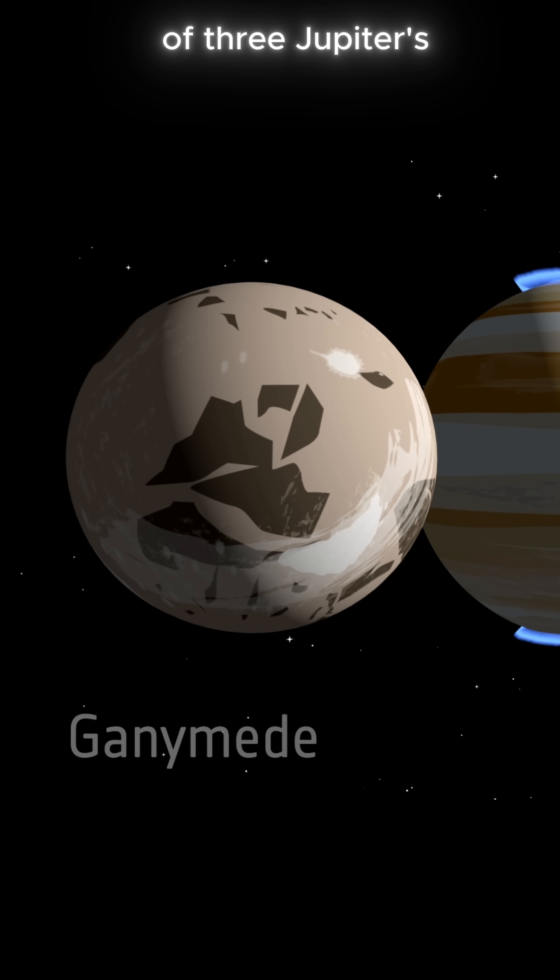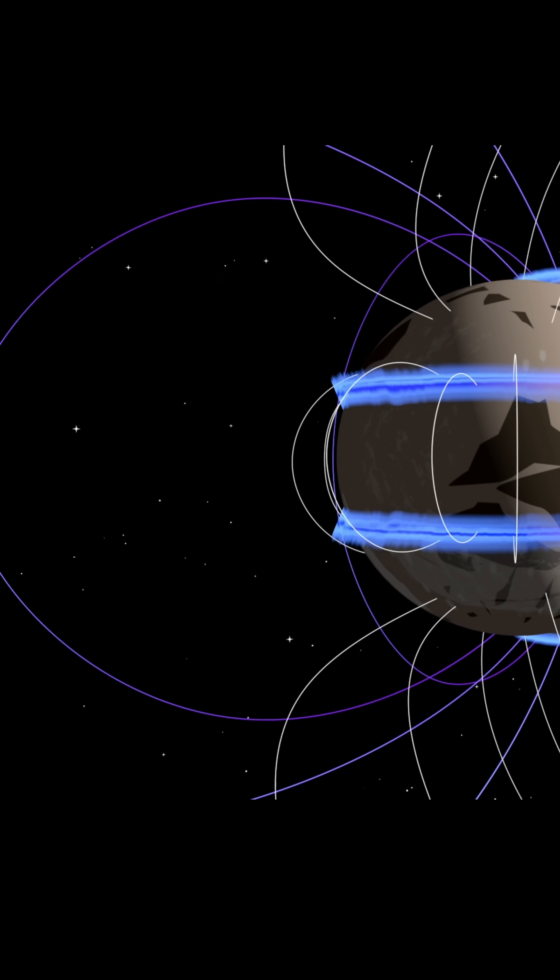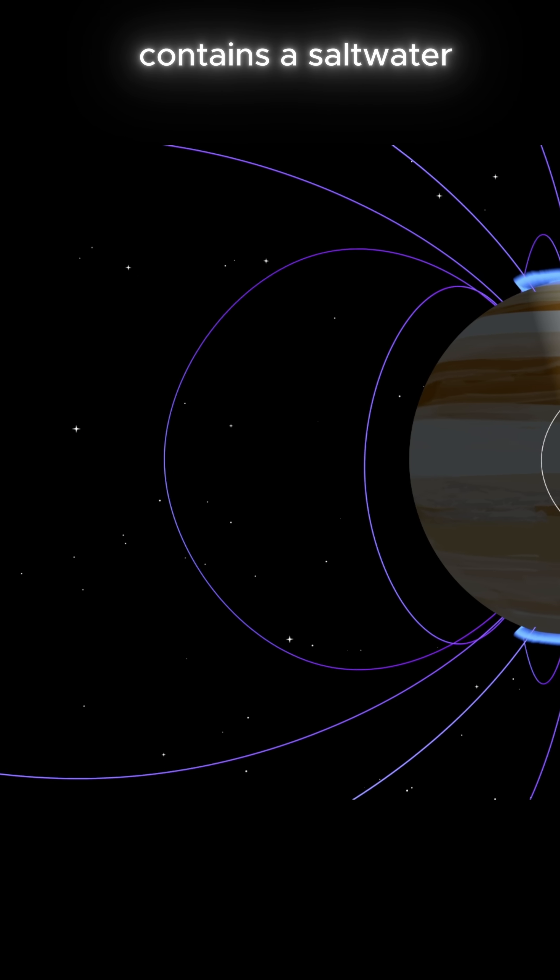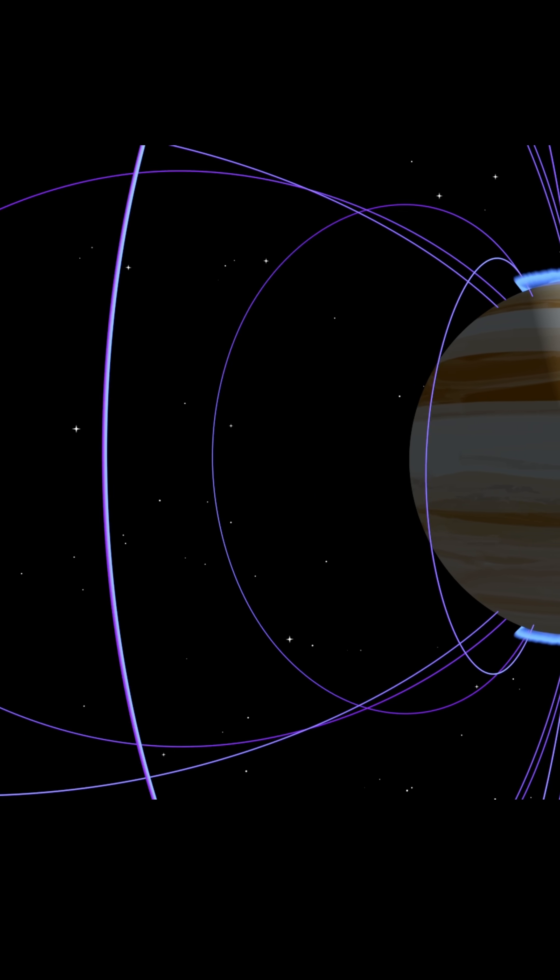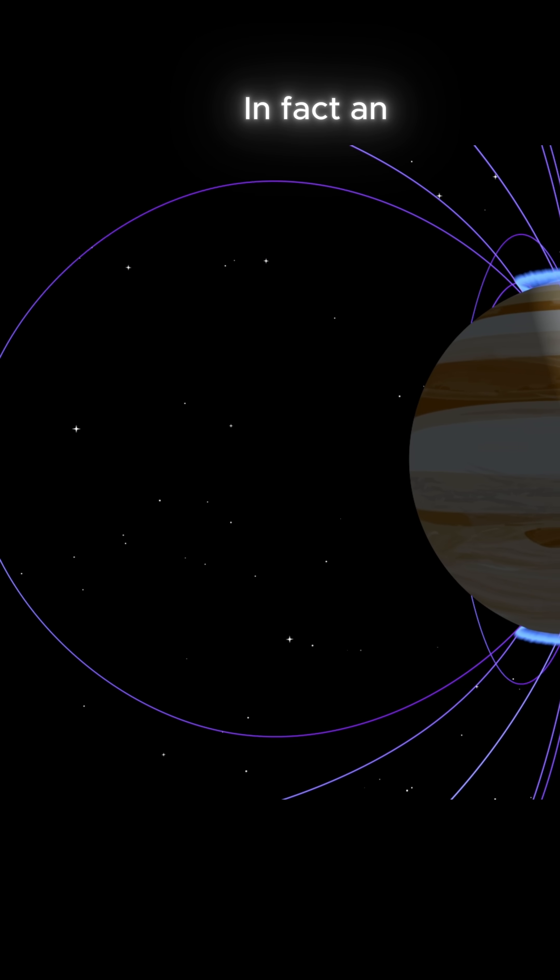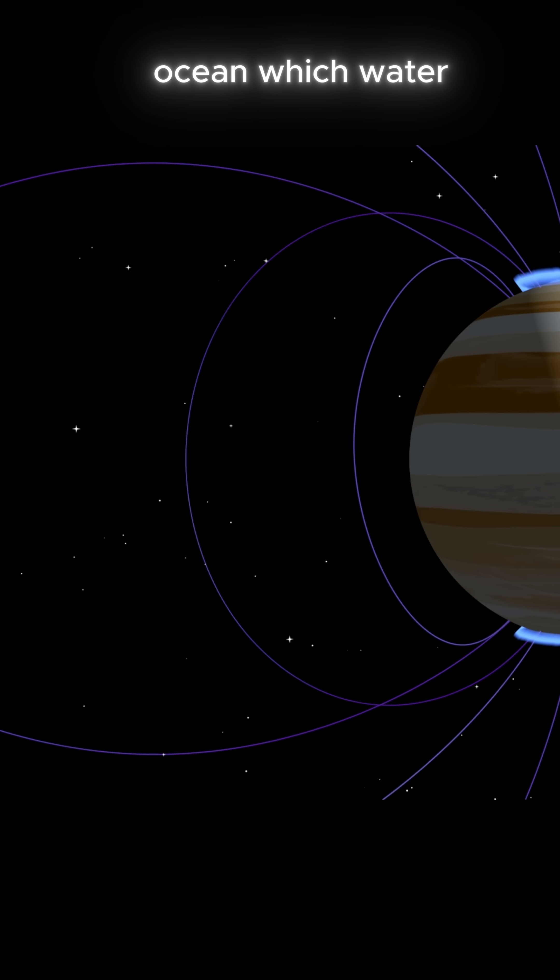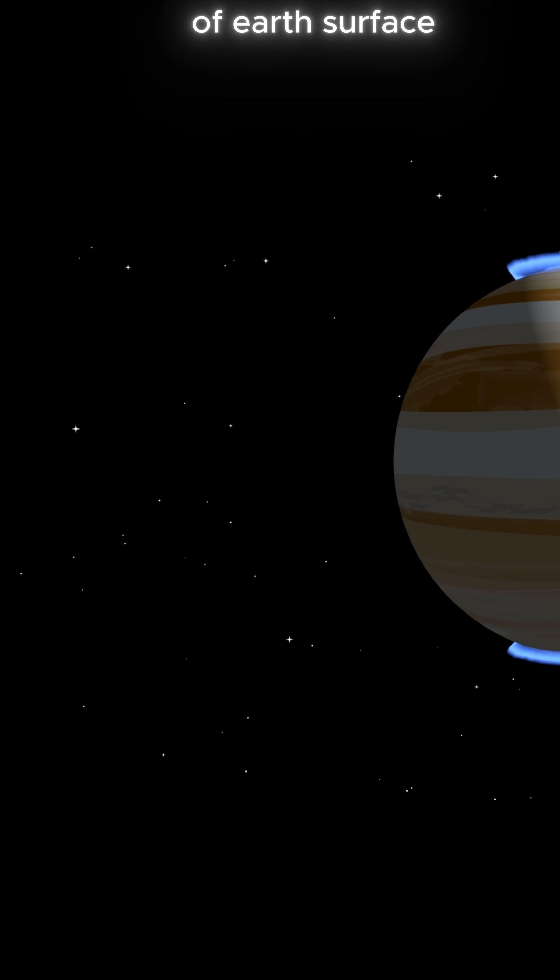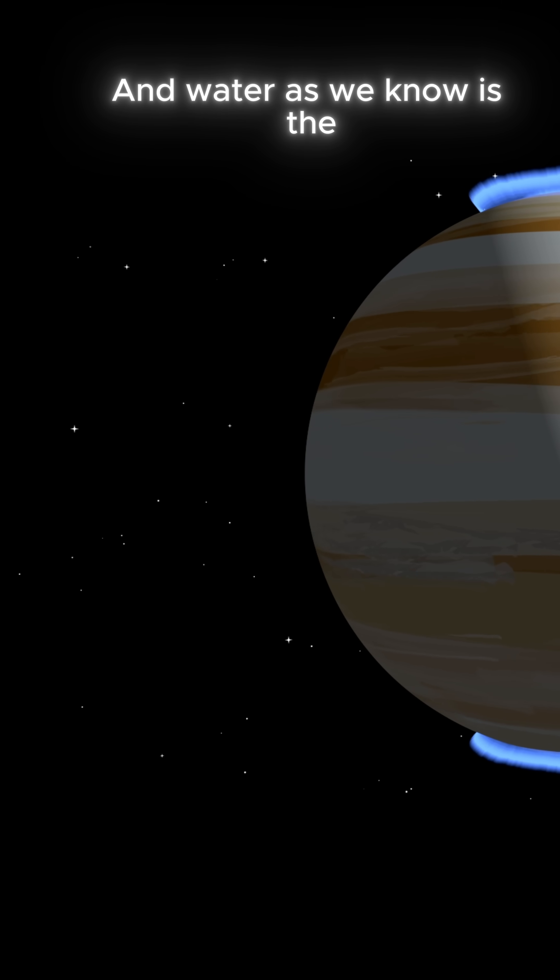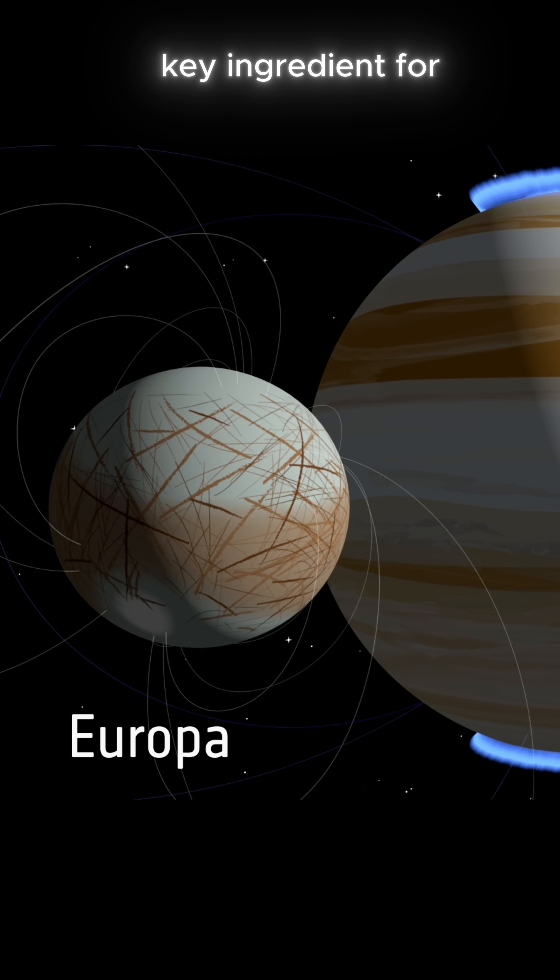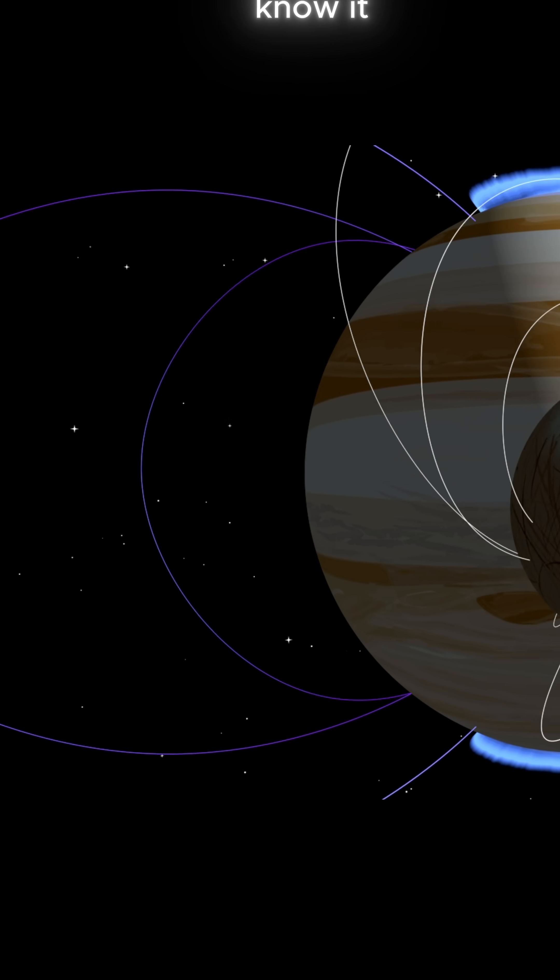Ganymede is one of Jupiter's three icy moons. Scientists believe it contains a saltwater ocean under its icy crust. In fact, an ocean whose water volume rivals that of Earth's surface water. And water, as we know, is a key ingredient for life as we know it.